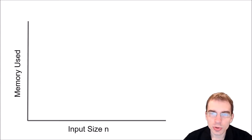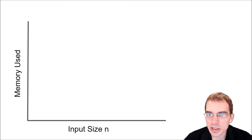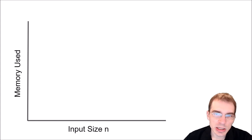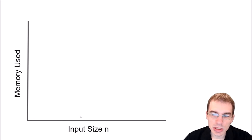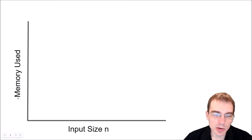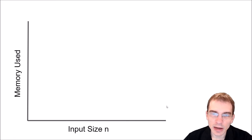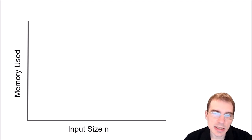So now we're going to go through the various common memory complexity classes, talk about what each one means conceptually, as well as giving an example of where you might see each in practice. On this plot, there is input size n on the x-axis and the amount of memory used on the y-axis. We're going to be plotting algorithms with different memory complexities to show how memory usage increases as input size increases, starting with the least memory complexity and working our way up.